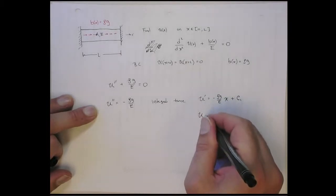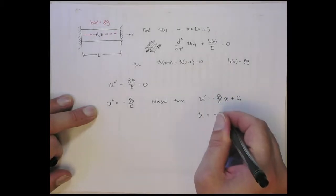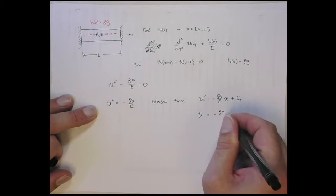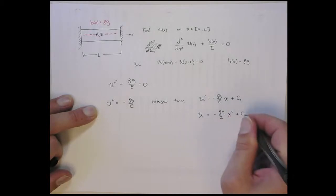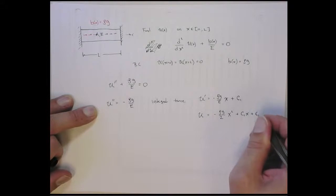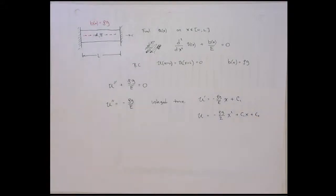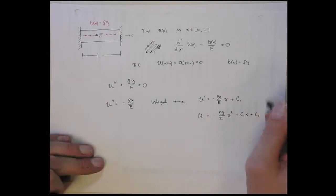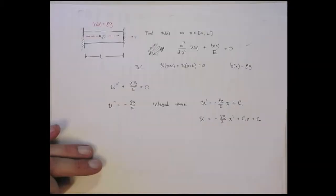And then if we integrate it again, I get u is equal to minus ρg over 2E times x squared plus c1 times x, plus another constant of integration c2. Anything of this form satisfies the ODE or the PDE.